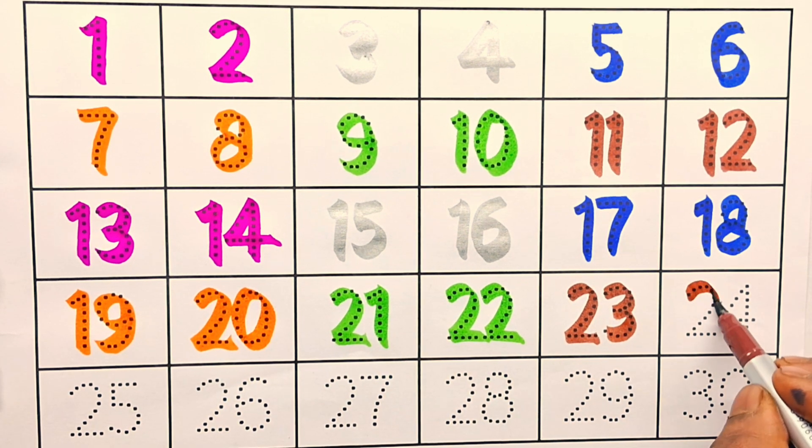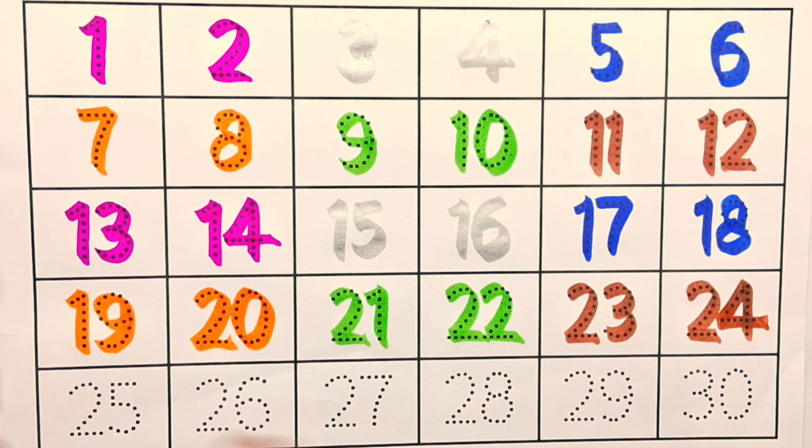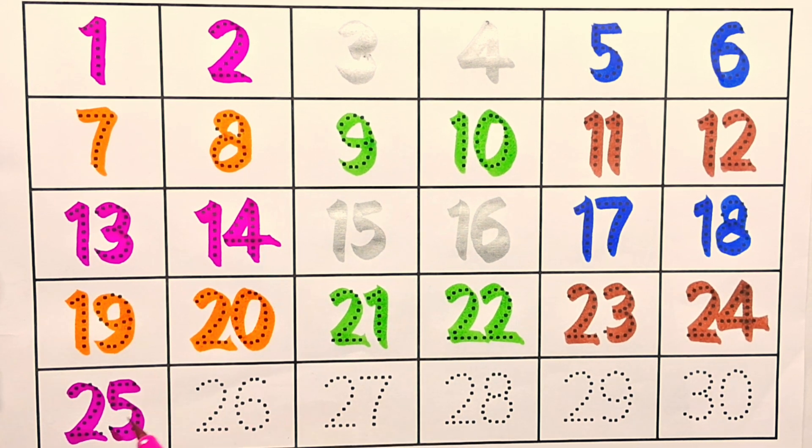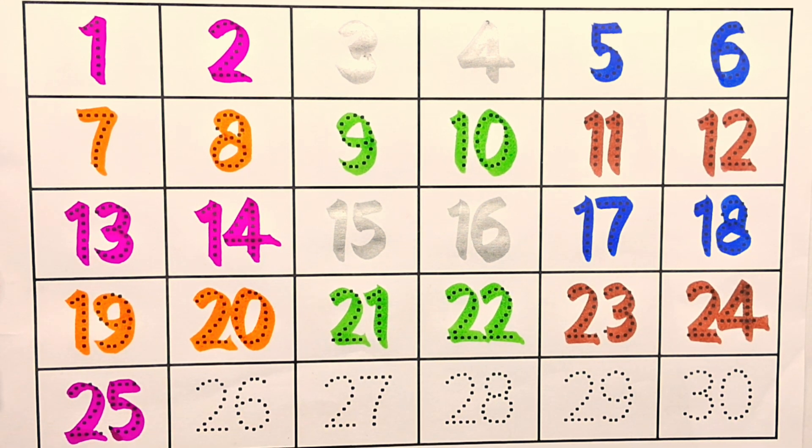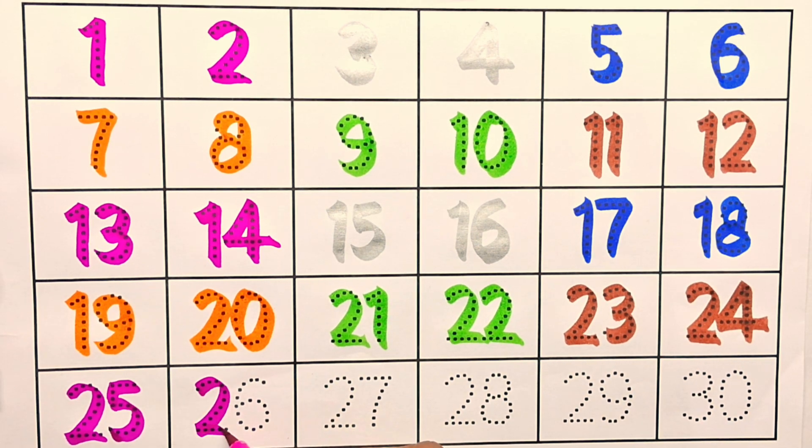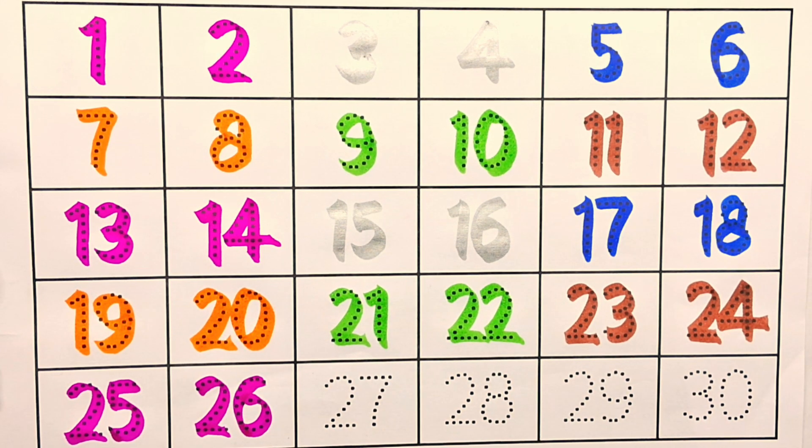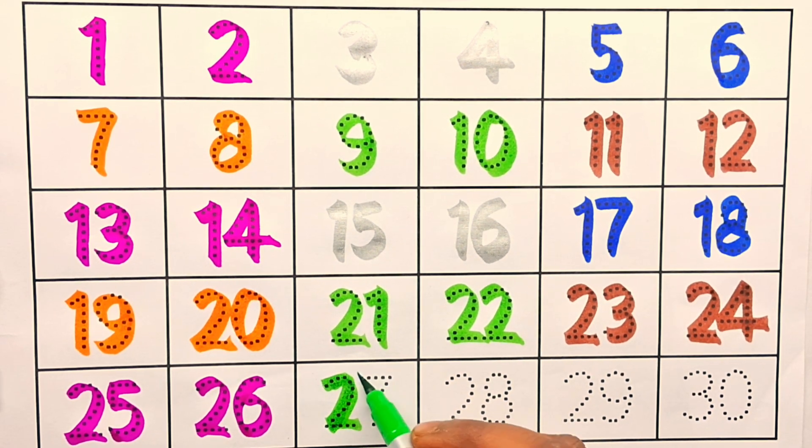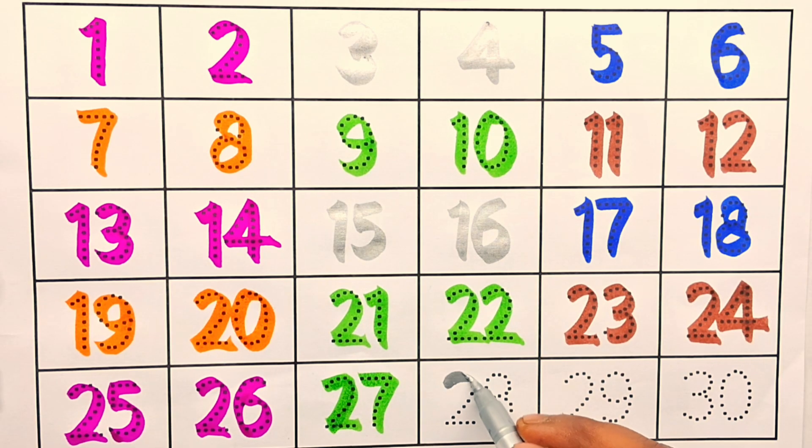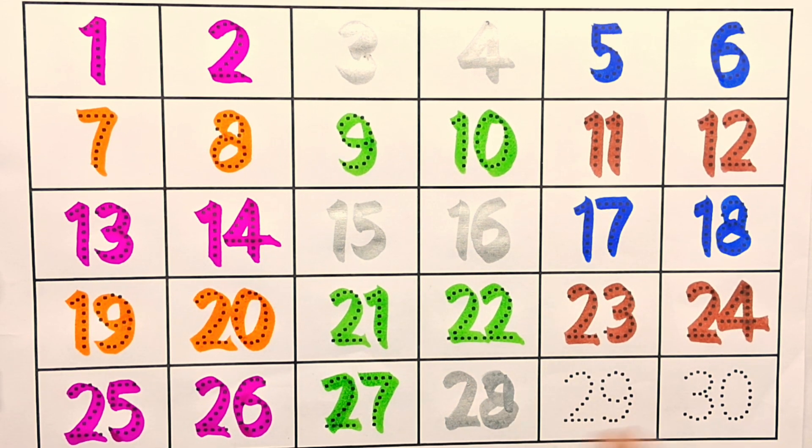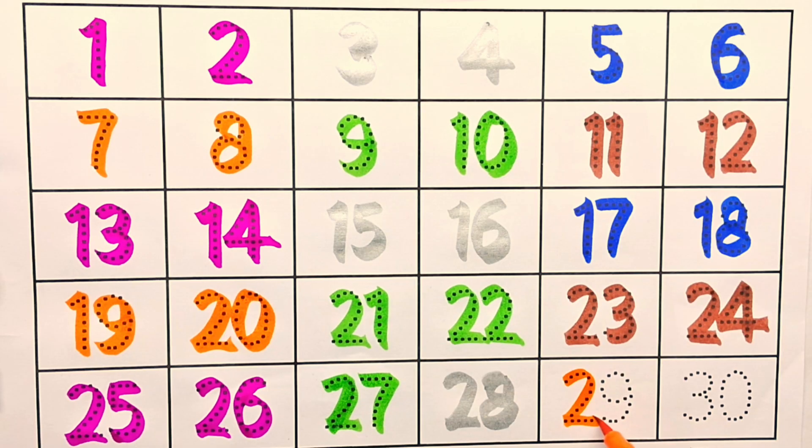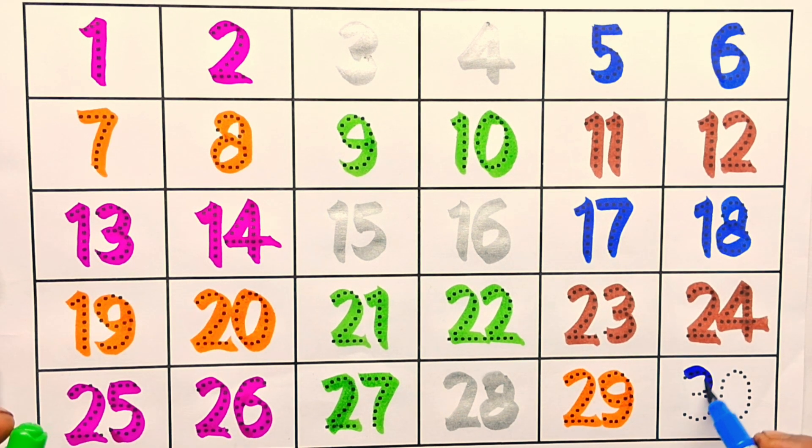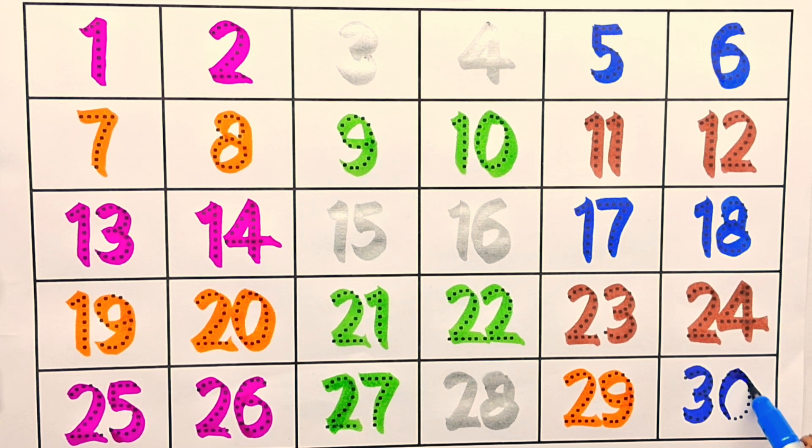Twenty-four, twenty-four, twenty-five, twenty-five, twenty-six, twenty-six, twenty-seven, twenty-seven, twenty-eight, twenty-nine, thirty, thirty.